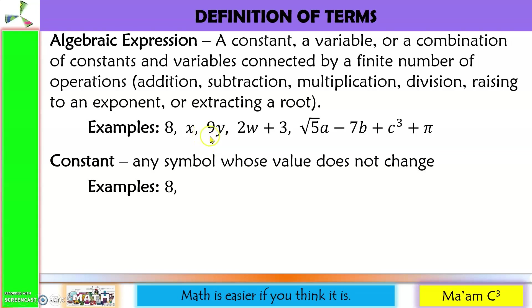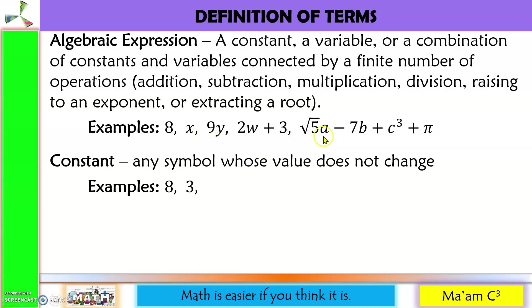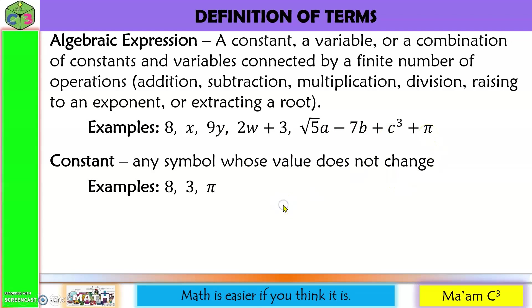If you wonder how it is called now, I'll tell you later. 2w is the same case as 9y. 3 here is a constant. And square root of 5a and 7b is same case as 9y. C is not a constant. Pi is a constant — it is an irrational number approximately equal to 3.1416.